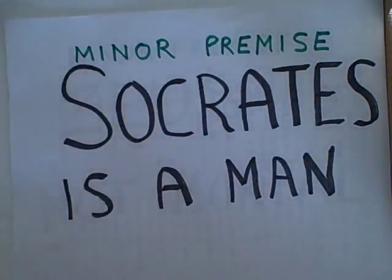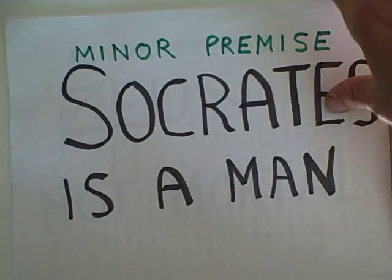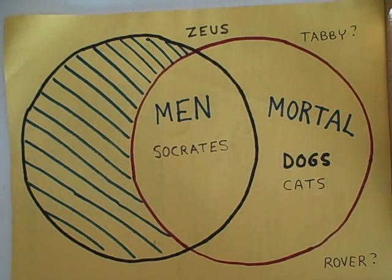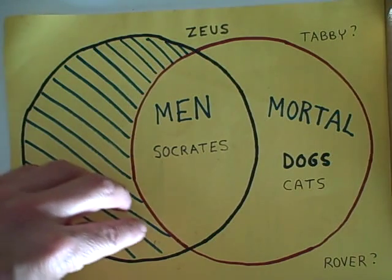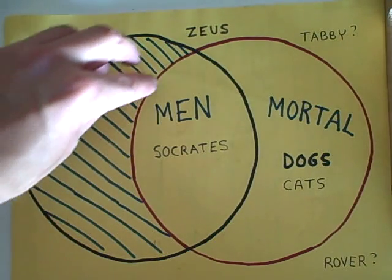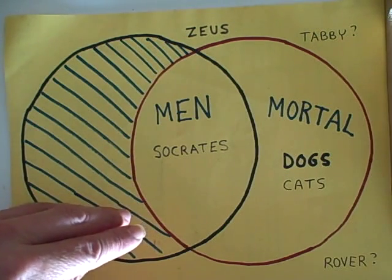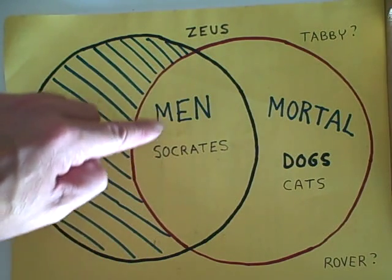Let's now take a look at our minor premise: Socrates is a man. We're going to have to figure out where we're going to put Socrates on this diagram. When we said all men are mortal, we knew that this area of the men circle did not exist, and so we shaded it out. There are no men who are immortal. Since all men are mortal, all men are in this little overlapping section.